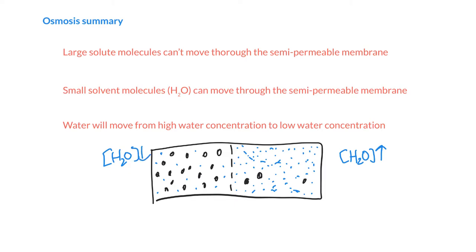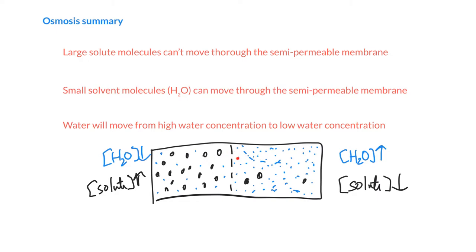The water on the right has a high concentration, and the water on the left-hand side has a low concentration. From the solute point of view, the solute has a low concentration on the right and a high concentration on the left. We would expect the solute to move from left to right, but it can't because it can't get through the membrane. The water instead moves from right to left — from high to low water concentration.